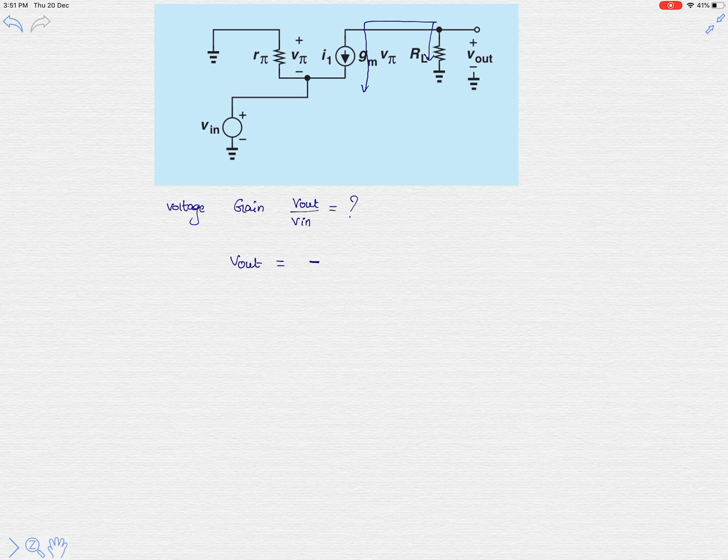So the output voltage is minus gm v pi multiplied, because this is the current flowing from ground to upwards direction. So V out is the current flowing through the resistance RL, that is minus gm v pi, and multiplied with the resistance, that is RL.